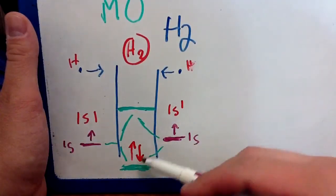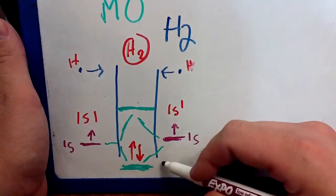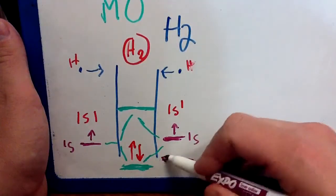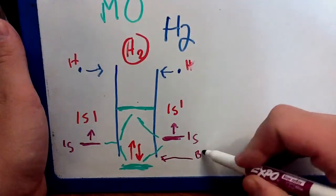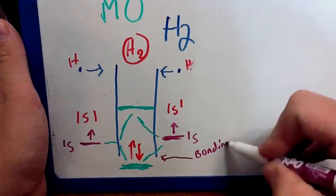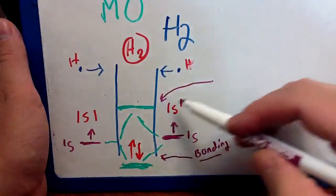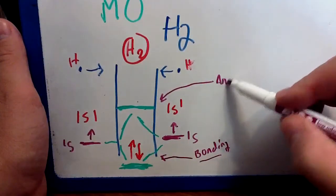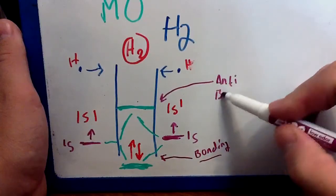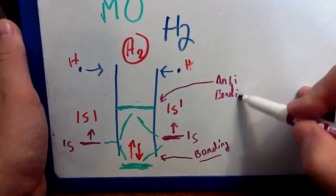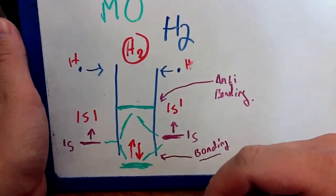And in fact, when we combine these wave functions, this lower energy orbital is what we call the bonding orbital, and this orbital up here is called the anti-bonding, anti-bonding, simply because it's higher energy.